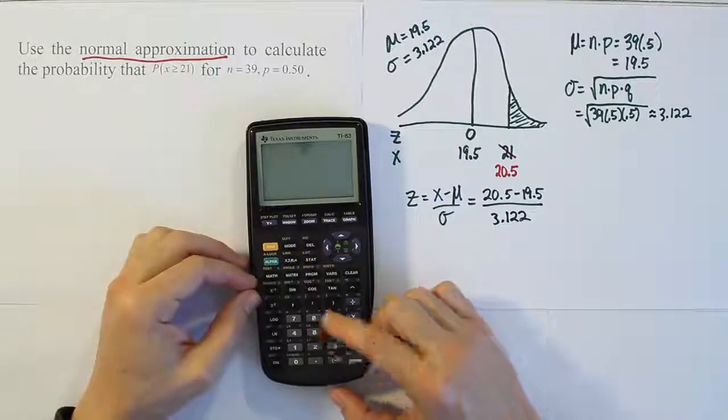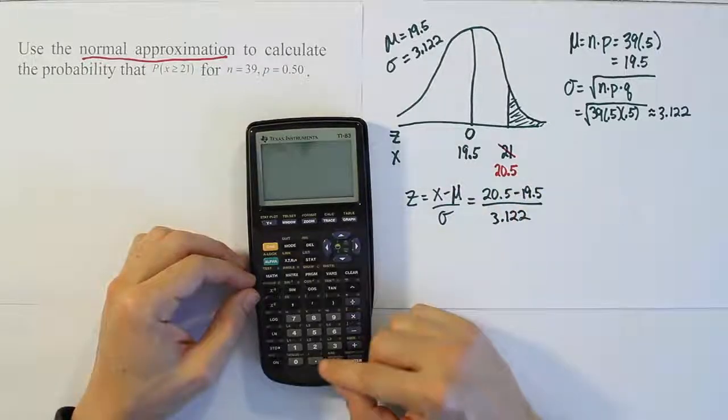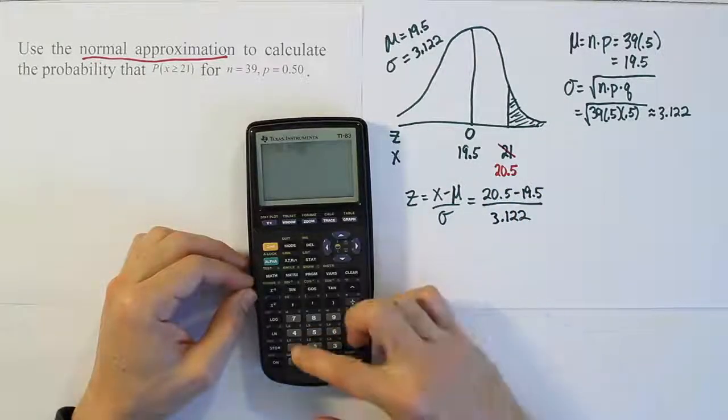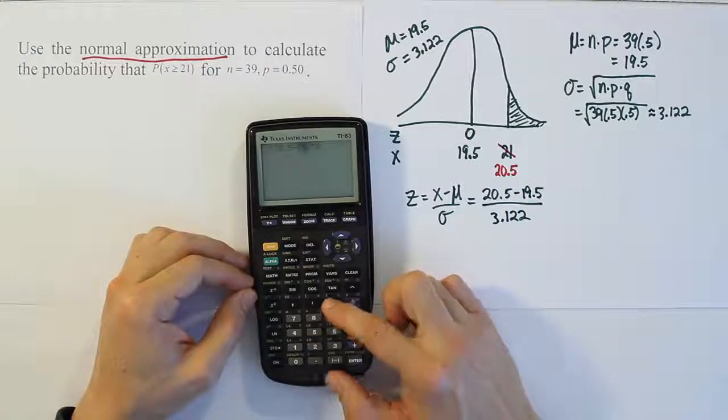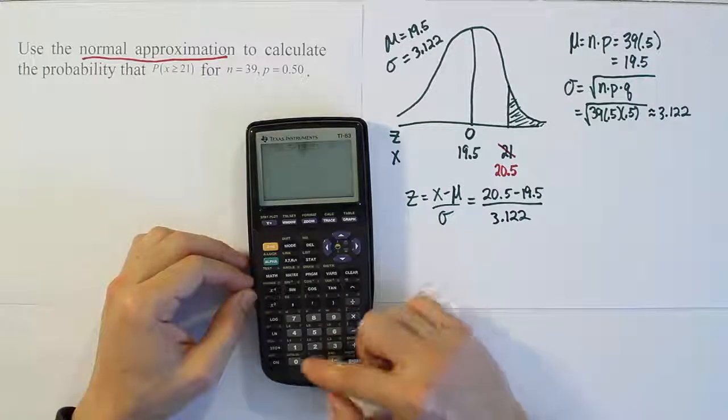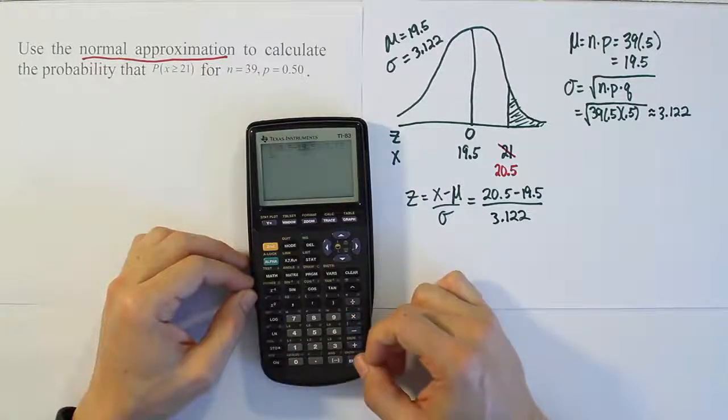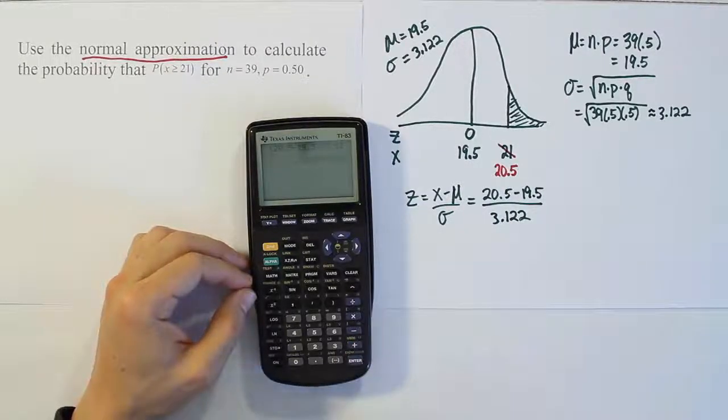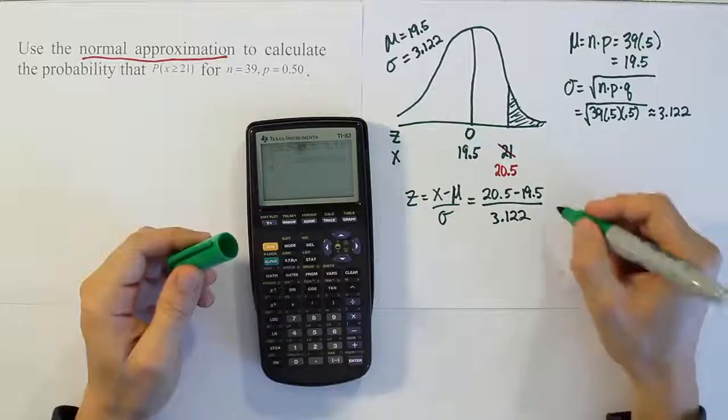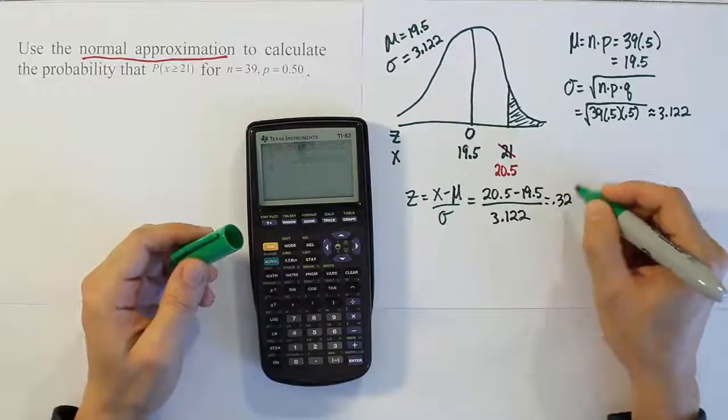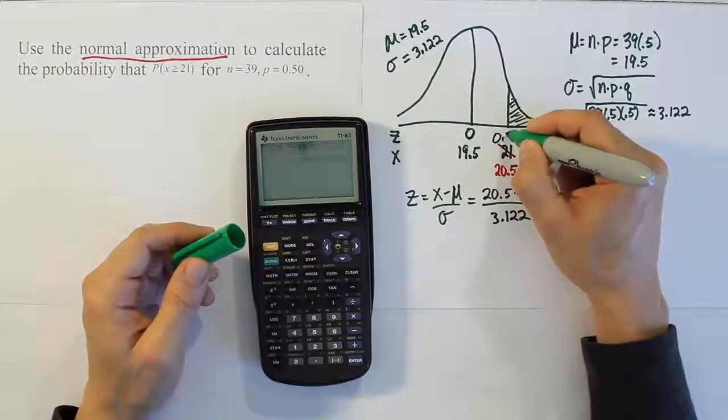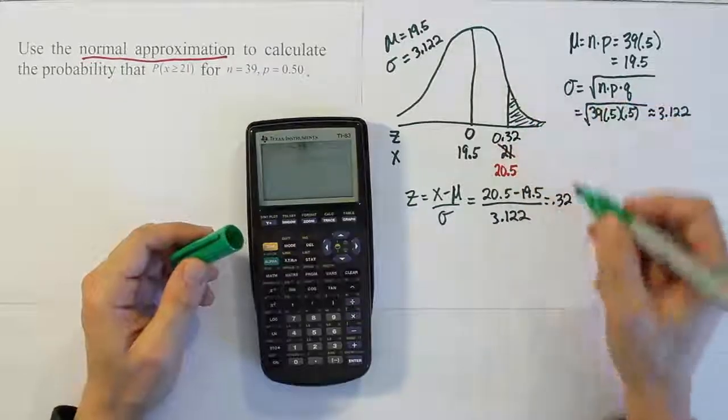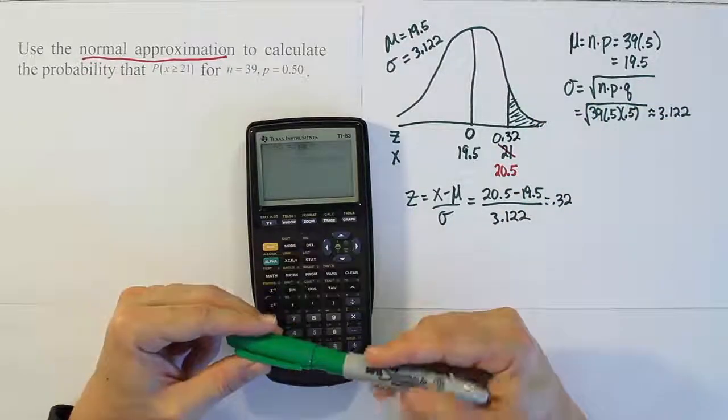If you want to do it all in one step for problems where the subtraction on top is not so easy, we'll do 20.5 minus 19.5, and then divide by 3.122. Or you could just do the subtraction on top of your head and divide it by 3.122. Either way, you get the answer 0.32 in this case. That's the number we're going to look up. Remember, it has to be rounded to two decimal places to use our z-table.